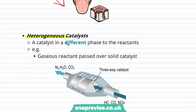The second category is the heterogeneous catalyst — catalysts in a different phase to the reactants. For example, a gaseous reactant passed over a solid catalyst. An example is the catalytic converter in the exhaust pipes of cars, which catalyzes the reaction of harmful gases such as carbon monoxide, produced through incomplete combustion, converting them to gases such as carbon dioxide.